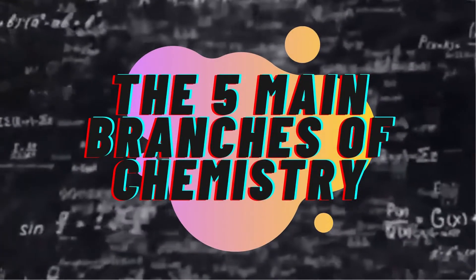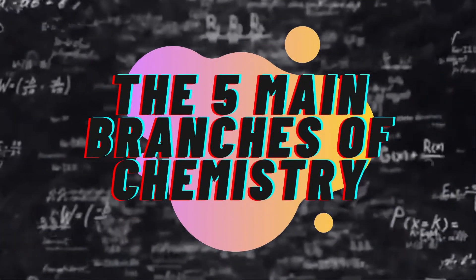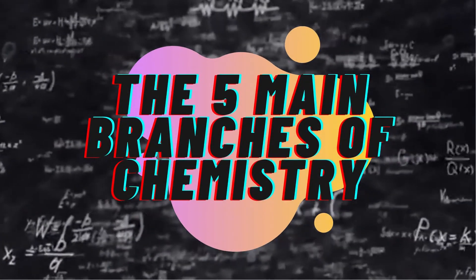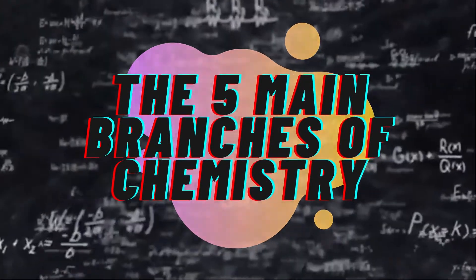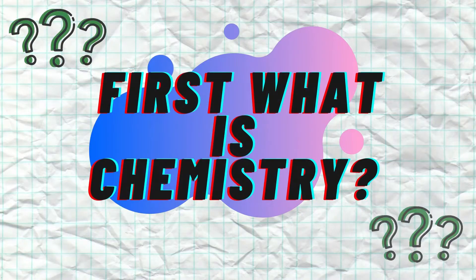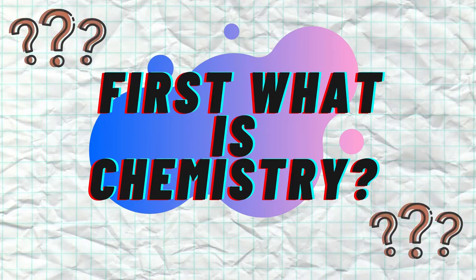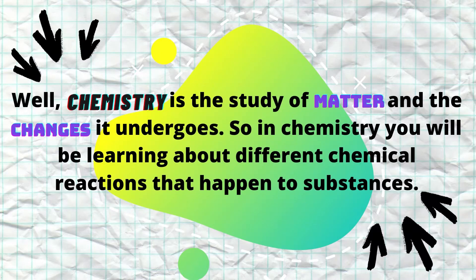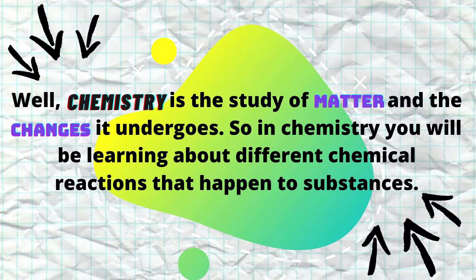The five main branches of chemistry. First, what is chemistry? Well, chemistry is the study of matter and the changes it undergoes. So in chemistry, you will be learning about different chemical reactions that happen to substances.